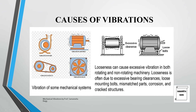Loose bolts are another cause: when a motor is bolted to the ground, vibration is absorbed and the system remains stable, but if the bolting is loose, there will be excessive vibration. Excess clearance between a shaft and bearing also causes vibration. Looseness can affect both rotating and non-rotating machinery and is often due to excessive bearing clearances, loose mounting bolts, mismatched parts, corrosion, and cracked surfaces.